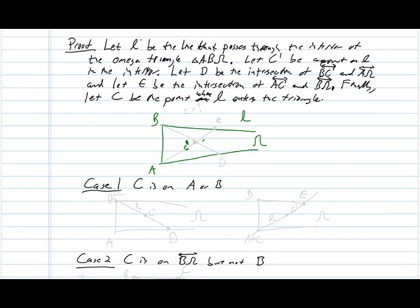We're going to define the points D and E as the points where AC prime intersects B omega and BC prime intersects A omega. And so we have two different possible triangles, regular triangles, inside this omega triangle: ADB and BAE. So C prime, remember, is a point on our line, and now we're going to let C be the point where our line L enters the triangle.